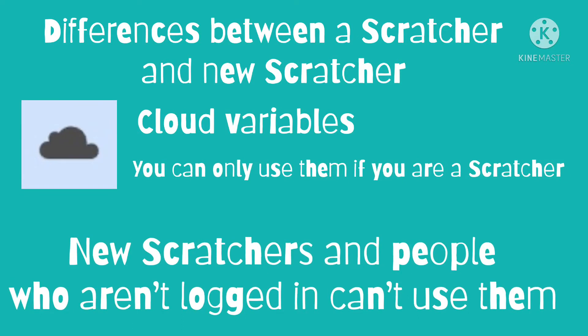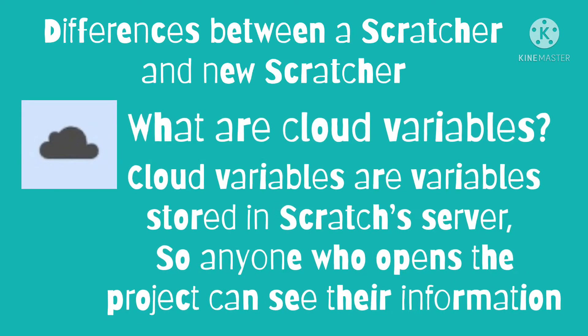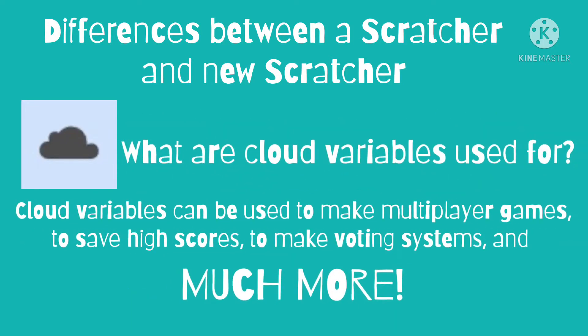The second difference is cloud variables. You cannot use cloud variables if you are a new scratcher — you need to become a scratcher to use them. Cloud variables are variables stored on the cloud server, and they can be used to store high scores that everyone can see, or to make multiplayer games.